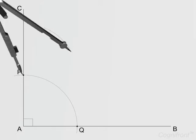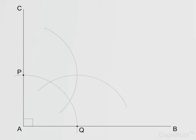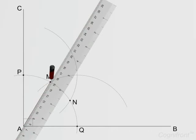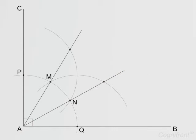Then with P and Q as centers draw arcs to cut the arc PQ at M and N respectively. Now join AM and extend it till it is long enough.